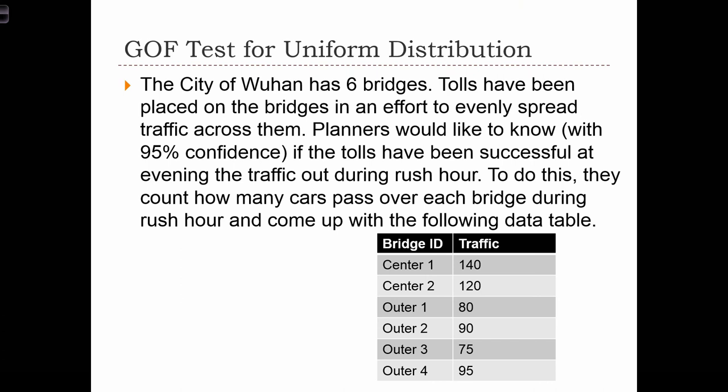Here's an example of a goodness-of-fit test for a uniform distribution of frequencies. In this example, we assume that the city of Wuhan, China has six bridges. Tolls have been placed on the bridges in an effort to evenly spread traffic across them. Planners would like to know, with 95% confidence, if the tolls have been successful at evening the traffic out during rush hour. To do this, they count how many cars pass over each bridge during rush hour and come up with the following data table.